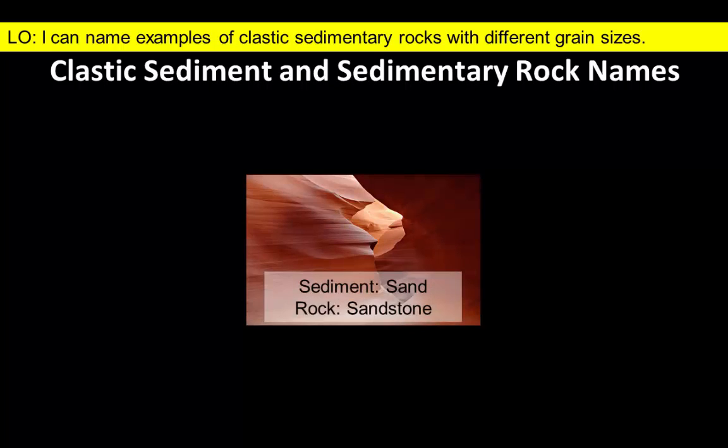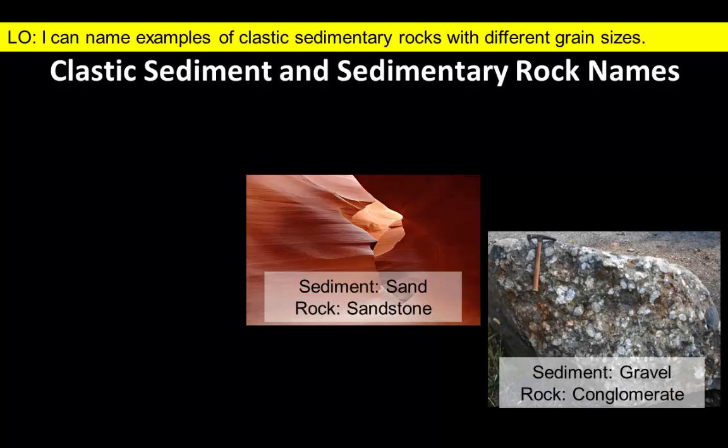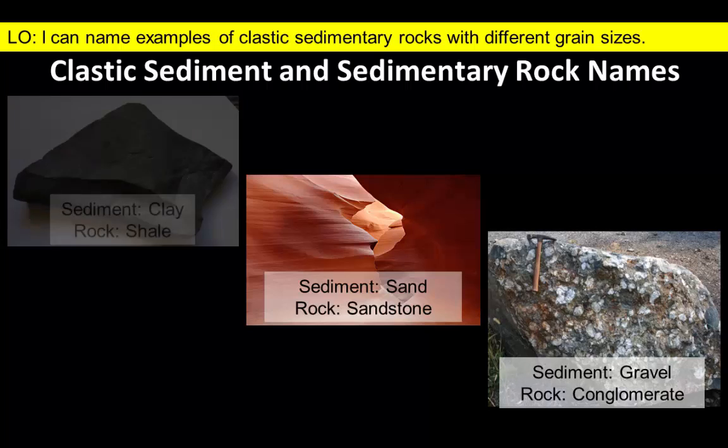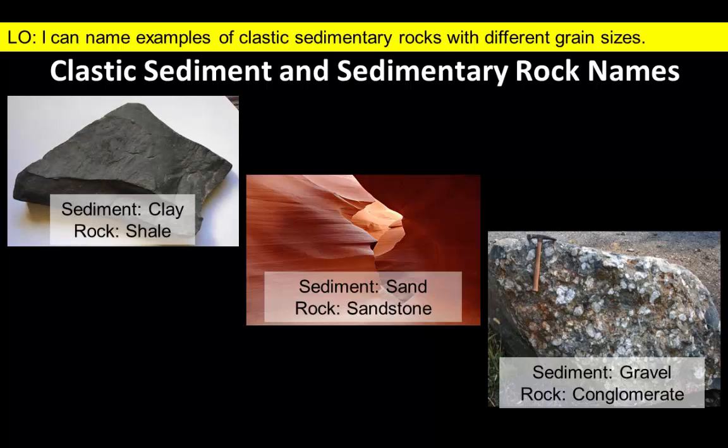Sometimes the link between sediment and rock is obvious, such as the lithification of sand to form sandstone. Other times the names of the sediment and the resulting sedimentary rock are quite different. For example, conglomerate forms from rounded gravels, and clay-sized particles are consolidated to form shale.